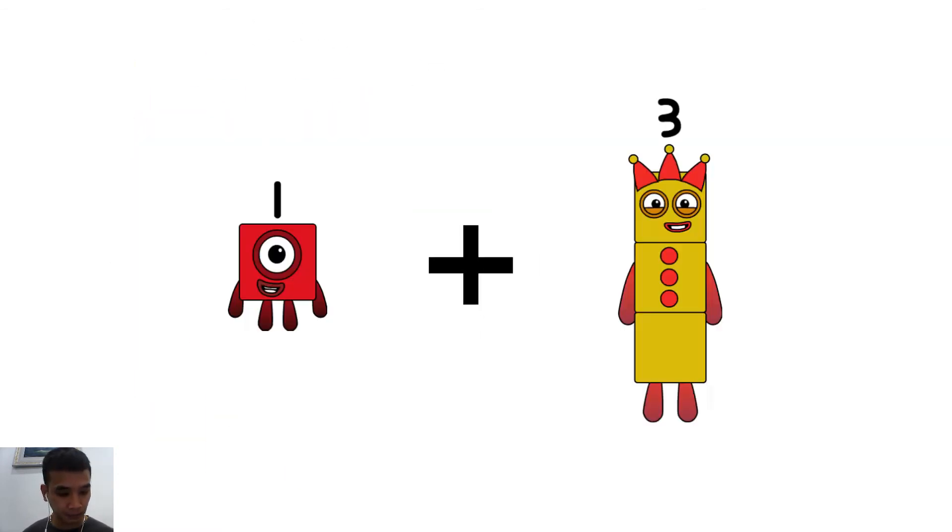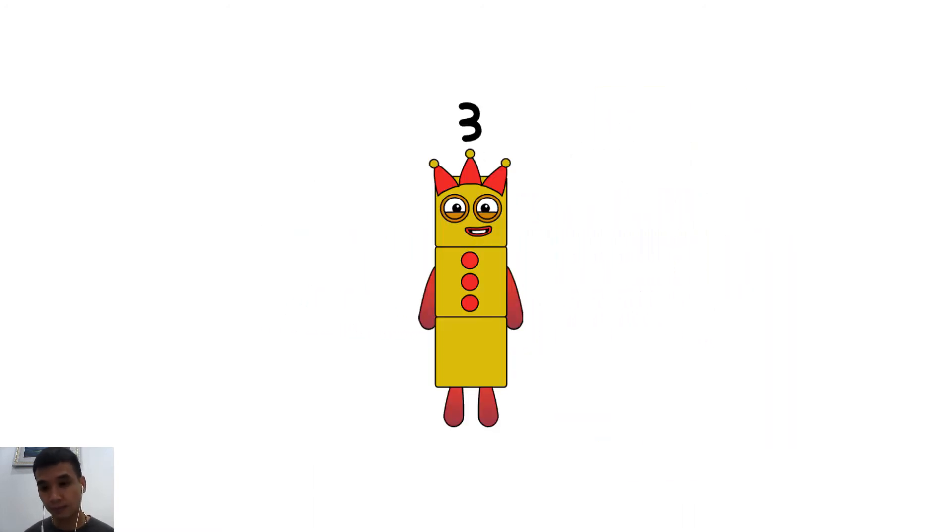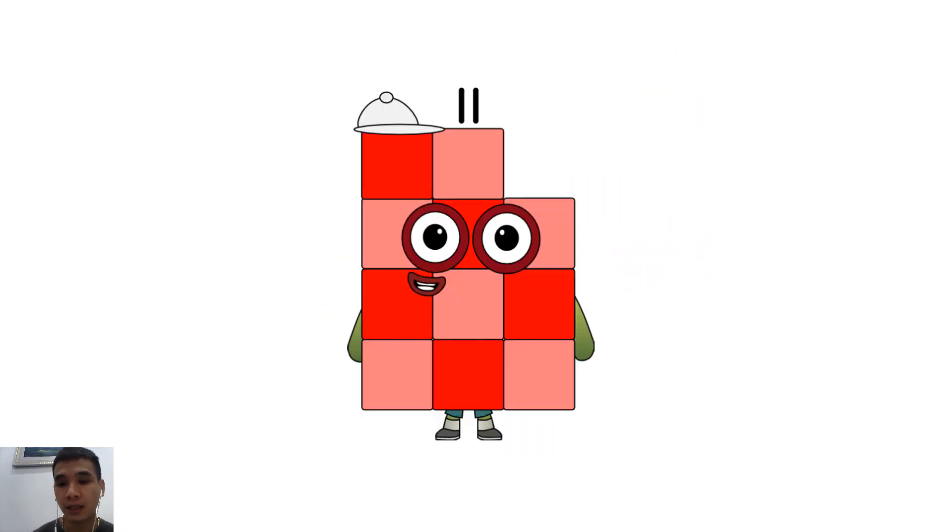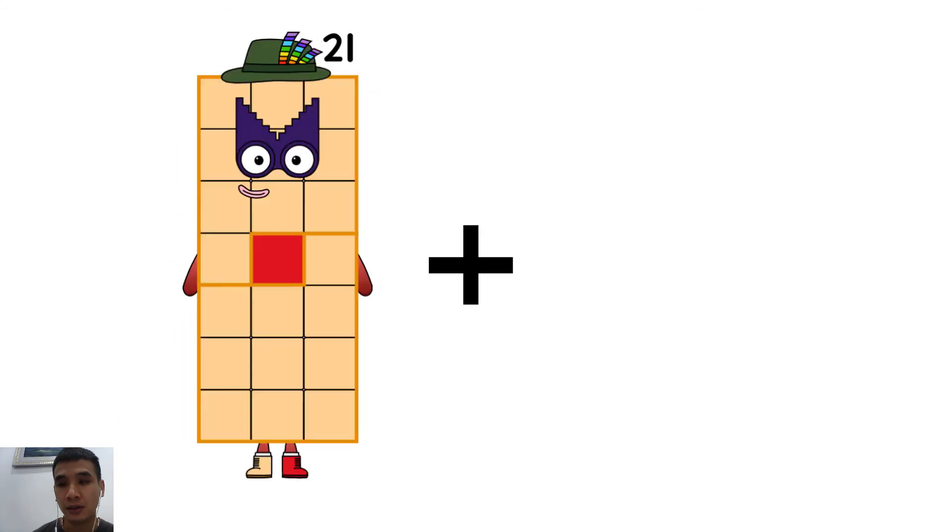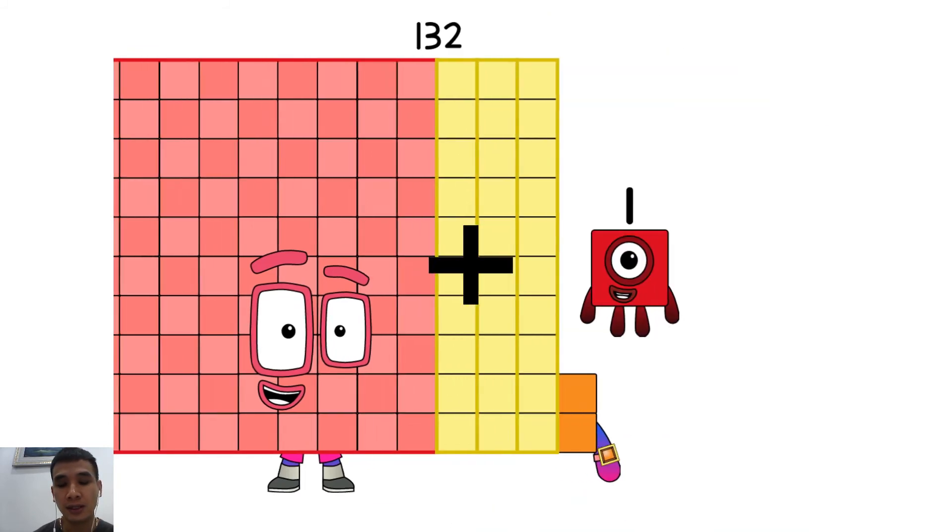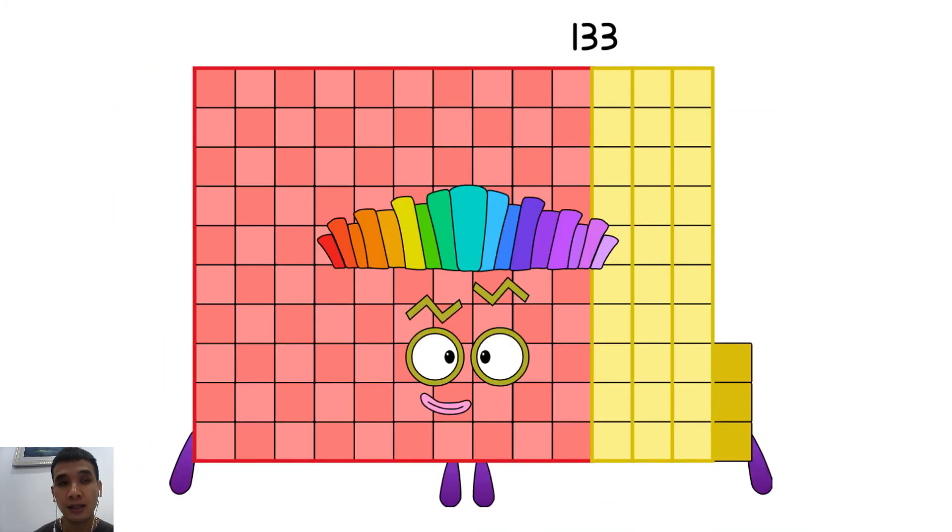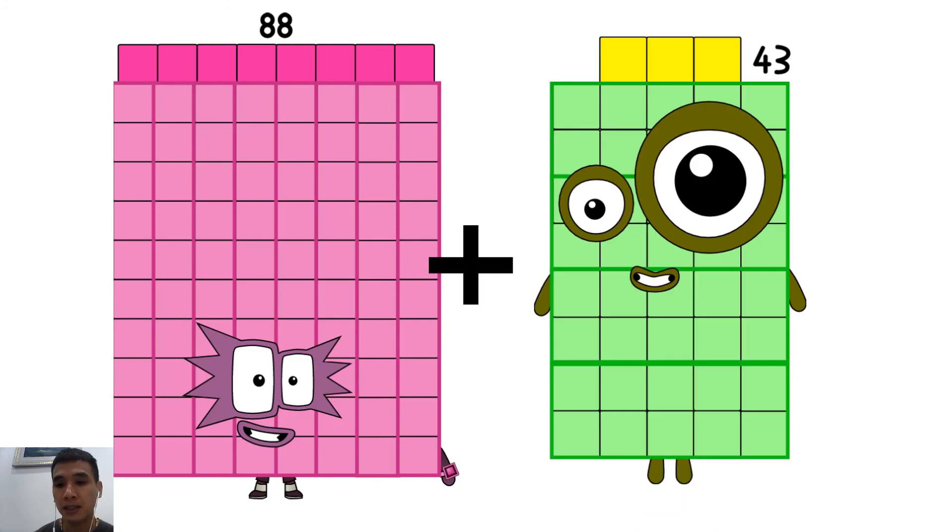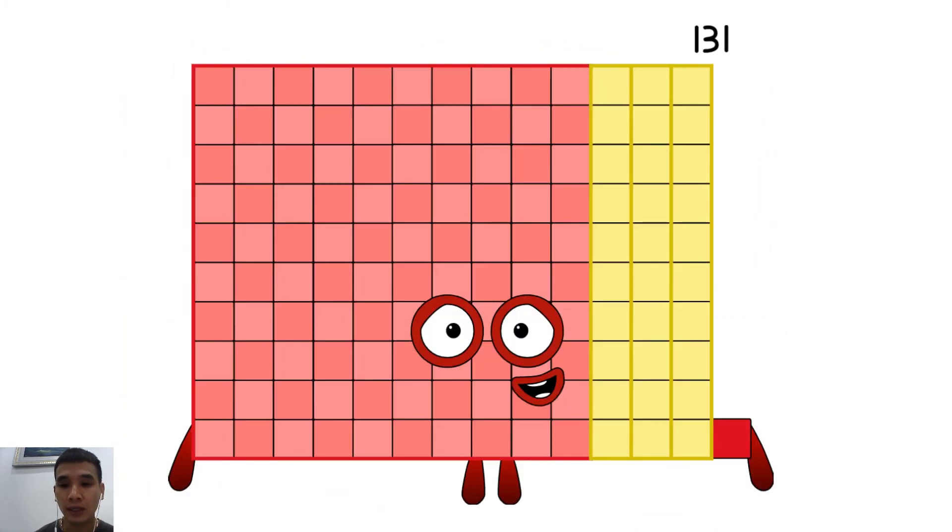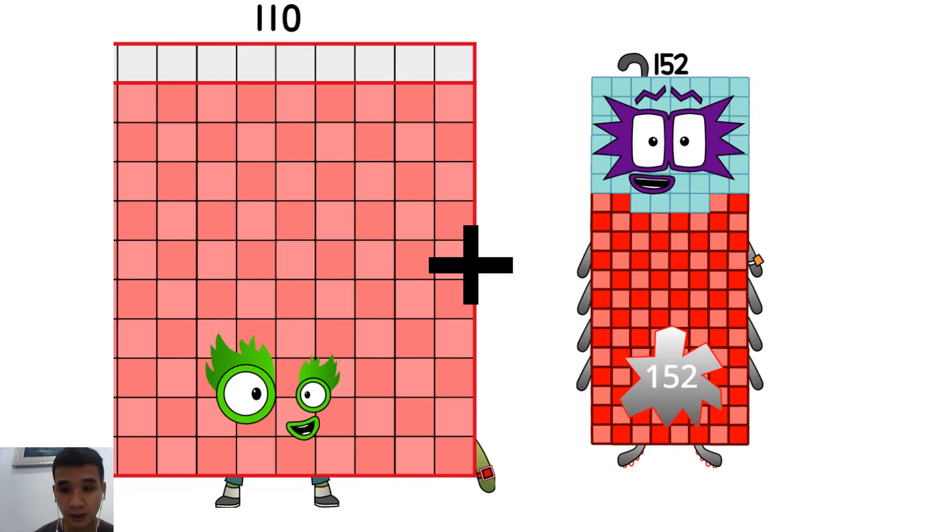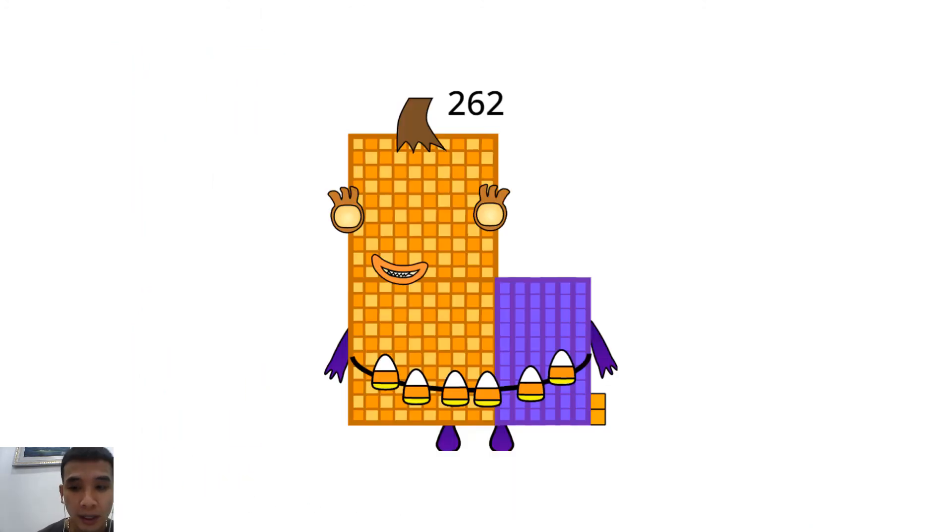1 plus 2 equals 3. 1 plus 10 equals 11. 132 plus 1 equals 133. 88 plus 43 equals 131. 110 plus 152 equals 262.